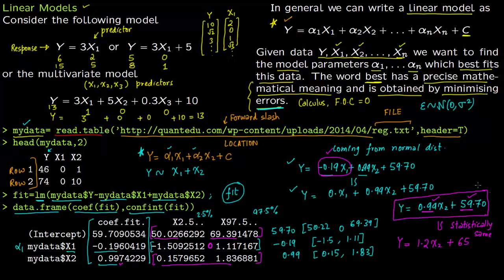To recap: run the lm() command to get a model that minimizes errors, then check each coefficient's confidence interval. If the interval contains zero, drop that term. We dropped x1 because its CI contained zero; we retained α2 and the intercept because their CIs do not contain zero. The final model is y = 0.99·x2 + 59.70, and you can now feed in any value of x2 to get a predicted response value for y.